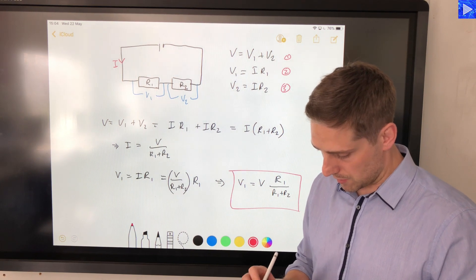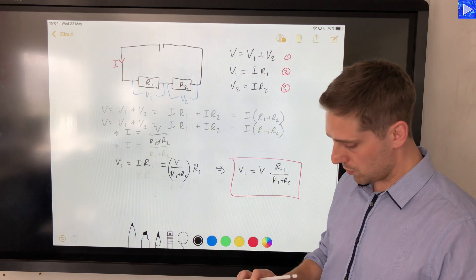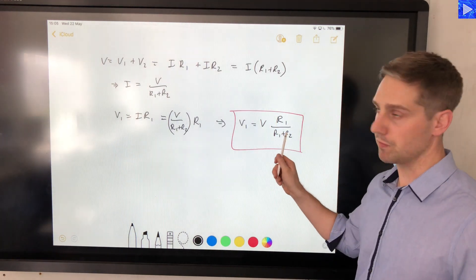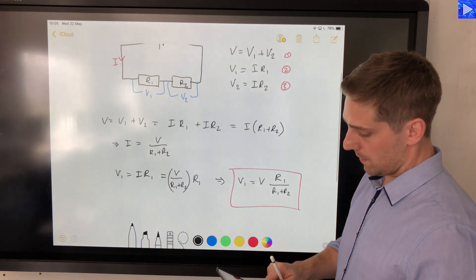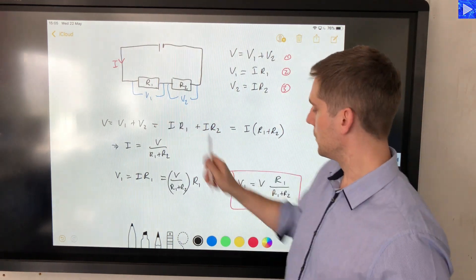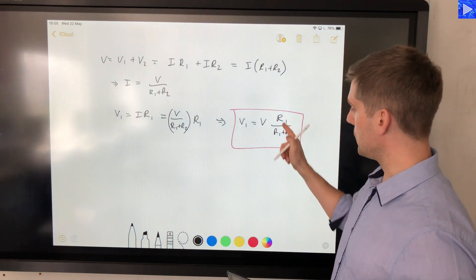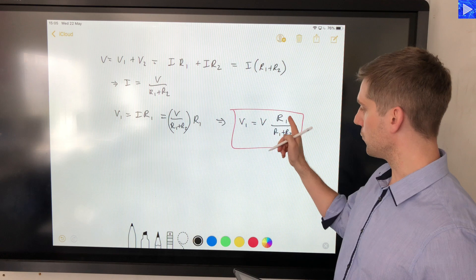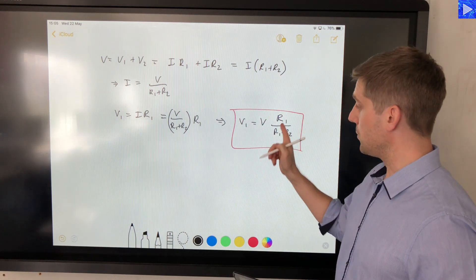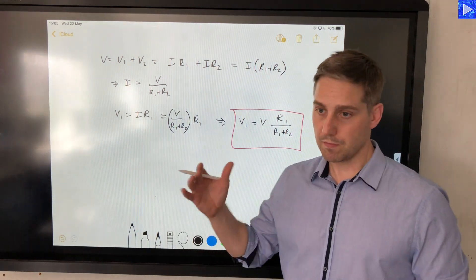We have an equation for V1 and it's equal to the input voltage multiplied by this ratio of the resistances. In this case, the resistor we want to know the voltage across divided by the total resistance. And we can see the units here will cancel out because we've got resistance over resistance. That will give us no units here. So on both sides we've got voltage units.